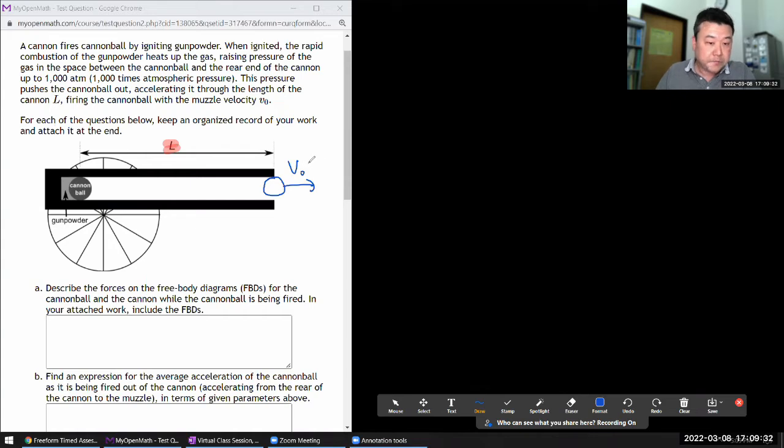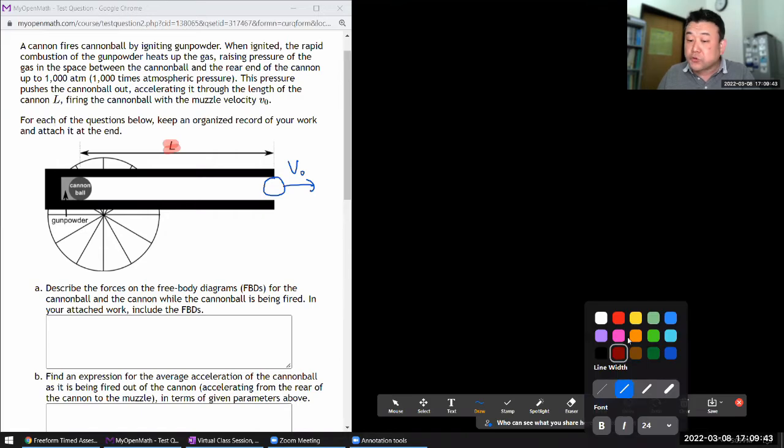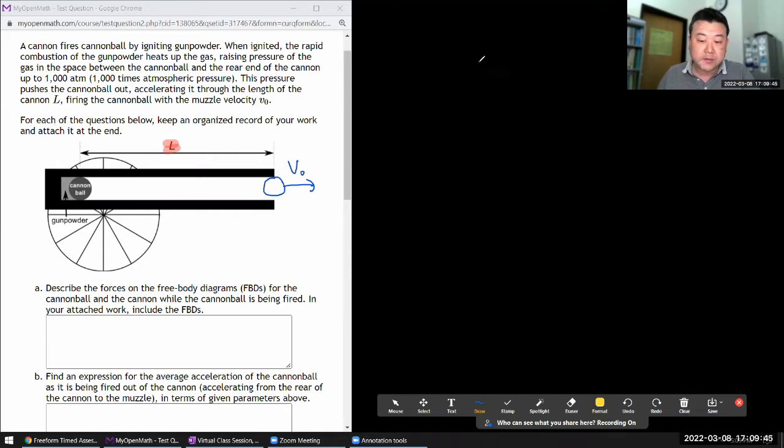Part A says describe the forces on the free body diagrams for the cannonball and the cannon while the cannonball is being fired. Let me draw the simplest possible free body diagram that you could draw. I'm not sure why this question is in the single object section of the thing.